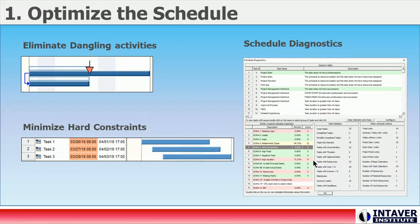The most important items are eliminating dangling activities. During a simulation, if you modify the dates or duration of activities that are missing predecessors or successors, these changes will not be reflected in the results of the simulation.